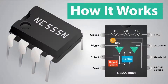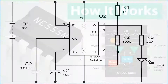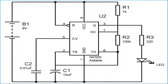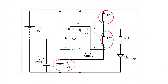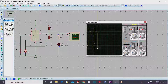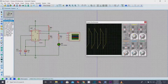The 555 IC is the best choice for generating astable oscillations. With the versatile NE555 IC, we can design an astable oscillator with the addition of just three external components: two resistors R1 and R2, and a capacitor C1. In astable mode, the 555 works as an oscillator circuit in which the output oscillates at a particular frequency and generates pulses in a rectangular waveform.